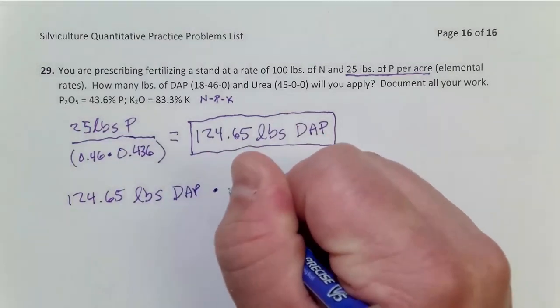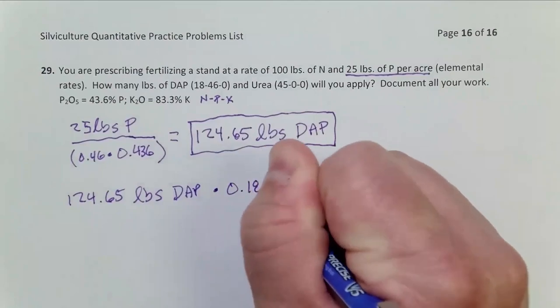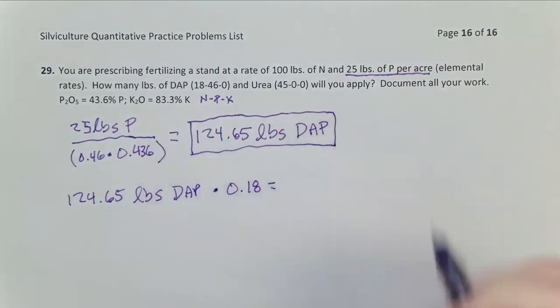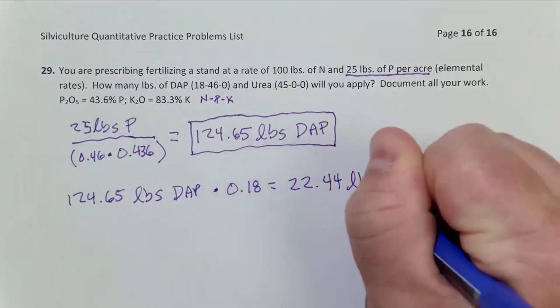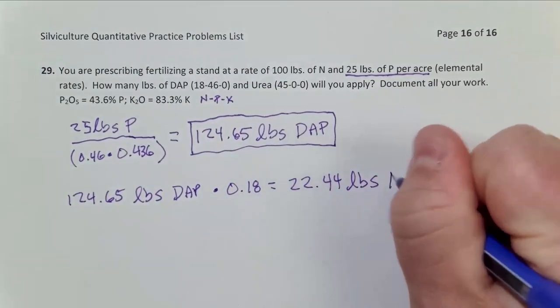So if this is 18% nitrogen, I can multiply with 0.18. And this is going to give me 22.44 pounds of elemental nitrogen that I've applied.